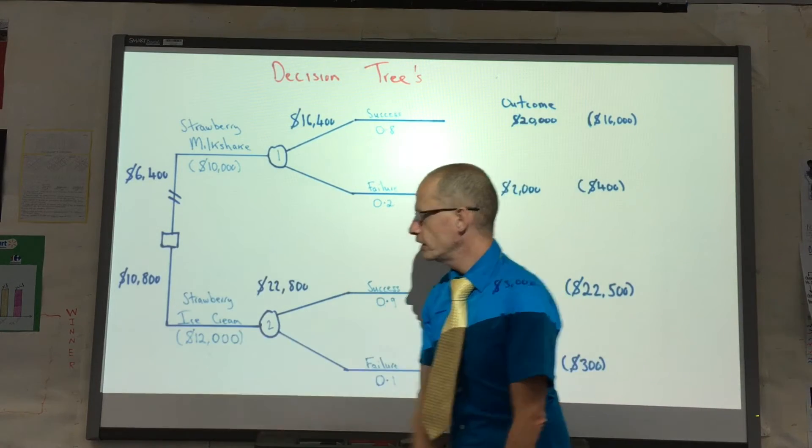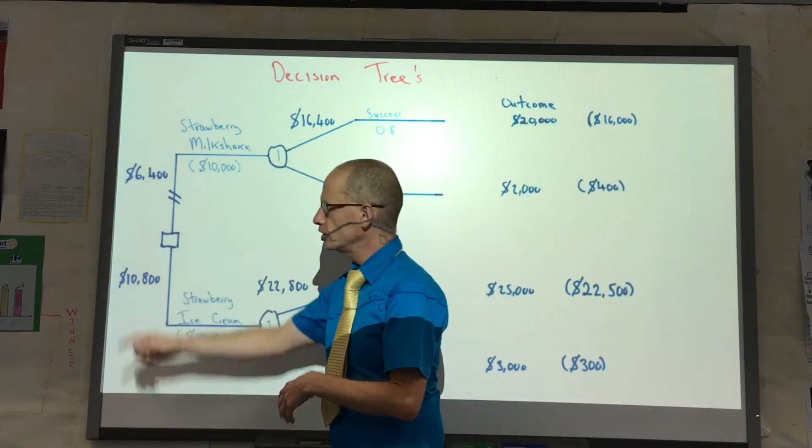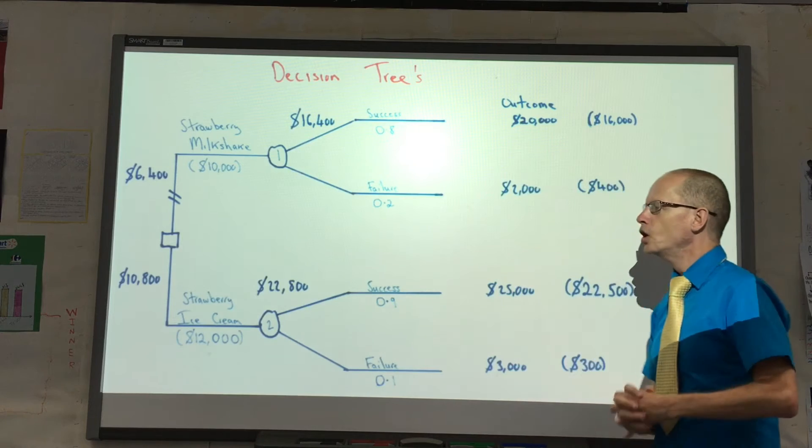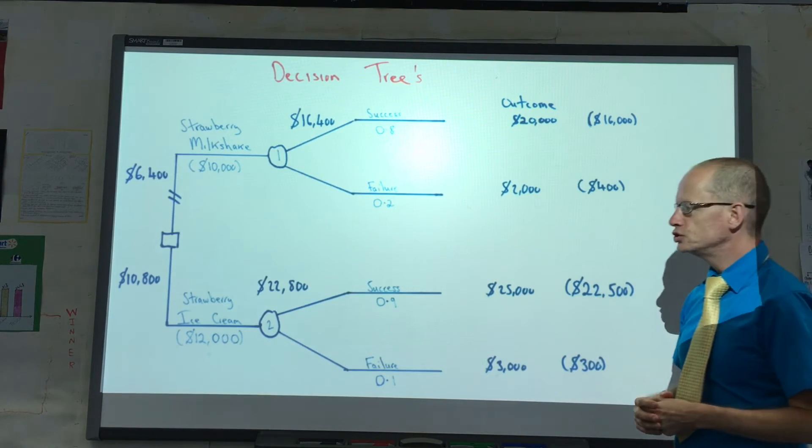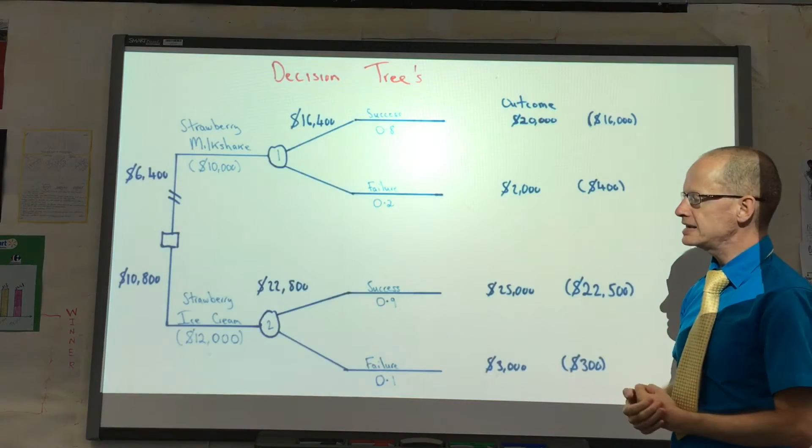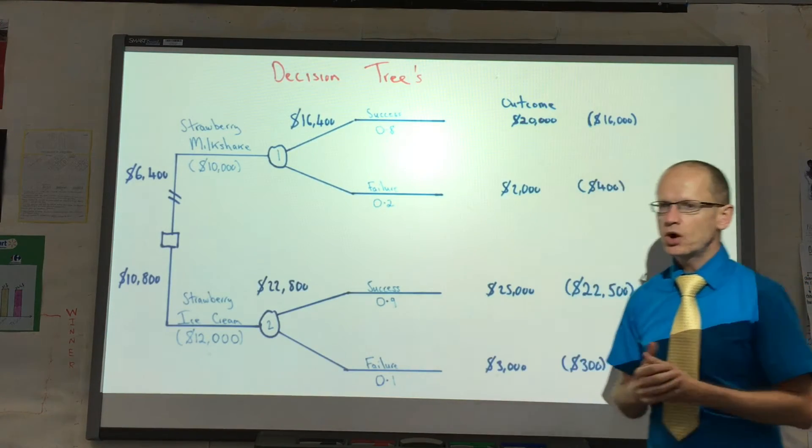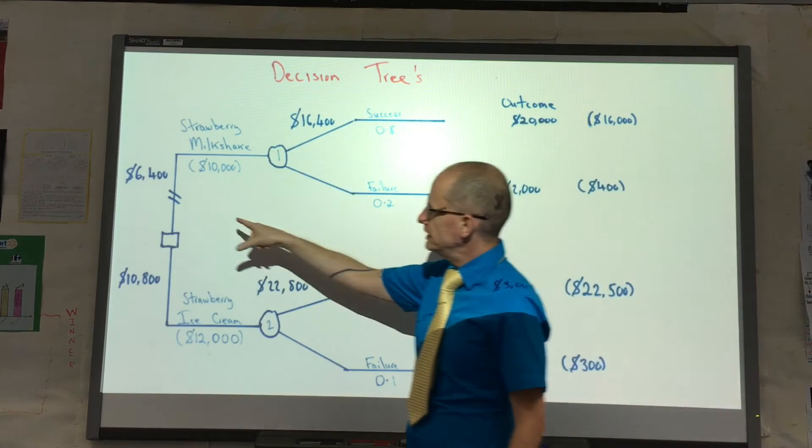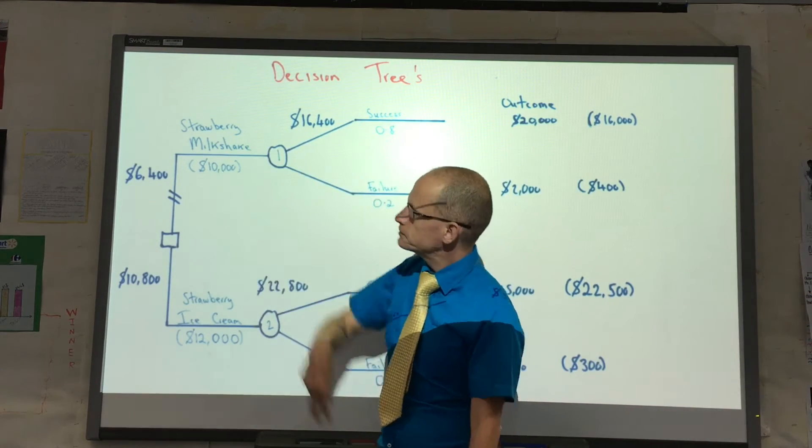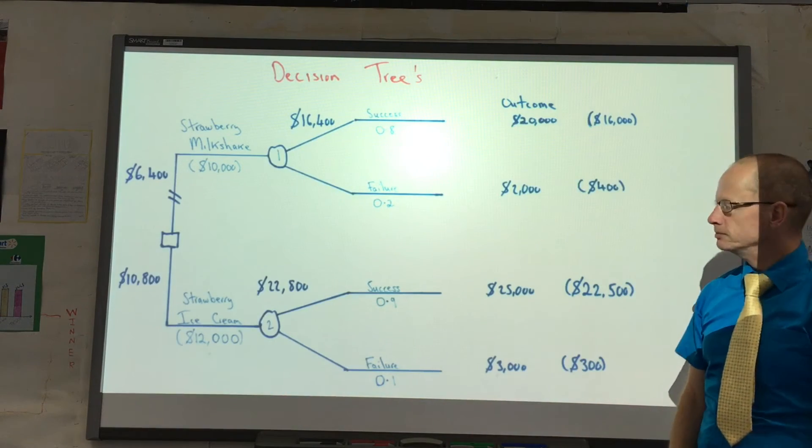We take away $12,000. The expected profit overall would be $10,800. Therefore we should choose strawberry ice cream. The final thing we show on this decision tree is these two little squiggles, which shows that this is the rejected option.